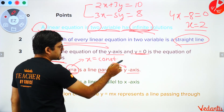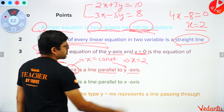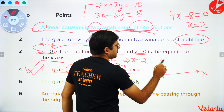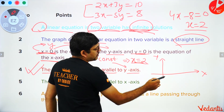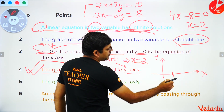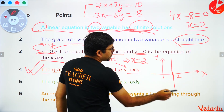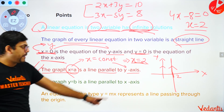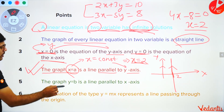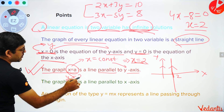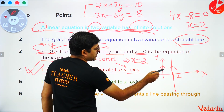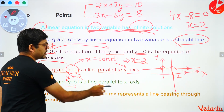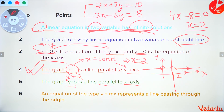For example, if you have x = 2, on the coordinate plane you mark x = 2 and draw a line parallel to the y-axis. Similarly, if you have y = constant, say y = 2, you mark that on the y-axis and draw a line parallel to the x-axis.